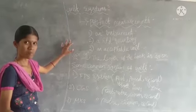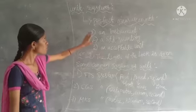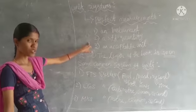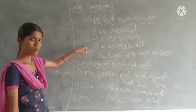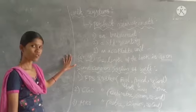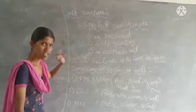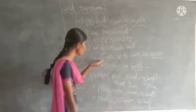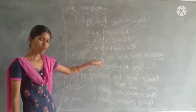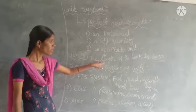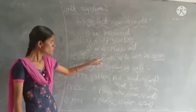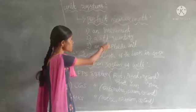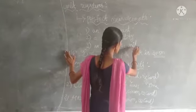So for a perfect measurement we need: first, an instrument; second, a standard quantity; and third, an acceptable unit. For example, to find the length of a book, the standard quantity is length. For small distances we use a scale, and for longer distances we use a measuring tape. To find the length of a book we use a simple scale. Here, the standard quantity is length, the acceptable unit is centimeter, and the instrument is the scale.